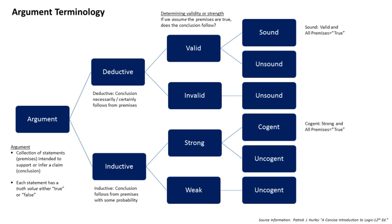A deductive argument is one that, if valid, has a conclusion that is entailed by its premises. In other words, the truth of the conclusion is a logical consequence of the premises — if the premises are true, then the conclusion must be true. It would be self-contradictory to assert the premises and deny the conclusion, because the negation of the conclusion is contradictory to the truth of the premises.